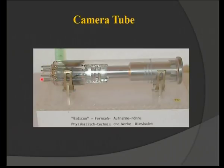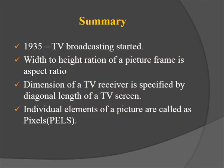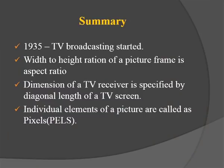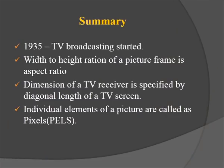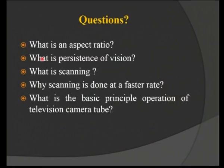This is how the camera tube physically looks — the front end captures light through focusing lenses. To summarize the session: TV broadcasting started in 1935; the standard aspect ratio is 4:3; the dimension of a TV receiver is always specified by its diagonal length; individual elements of a picture are called pels or pixels; and we covered the working of a TV camera tube and its importance in a picture transmission system. Review questions include: what is aspect ratio, what is persistence of vision, what is scanning, why is scanning done at a faster rate, and what is the basic operating principle of a television camera tube.